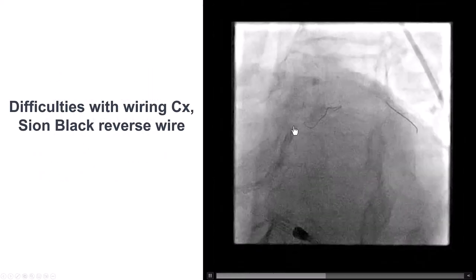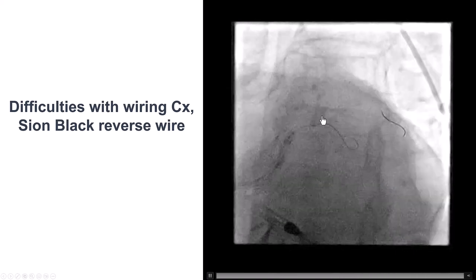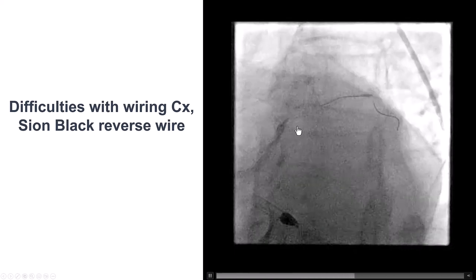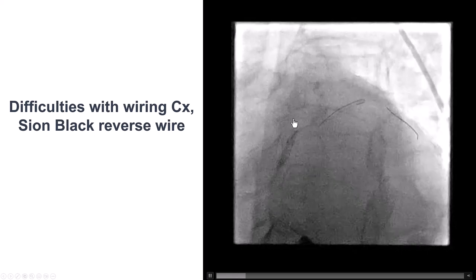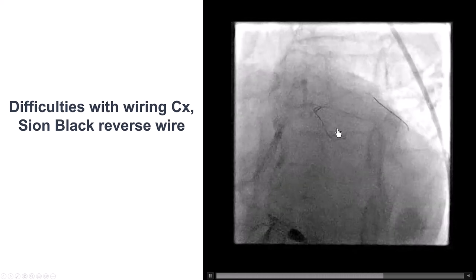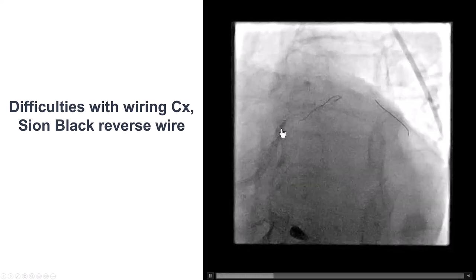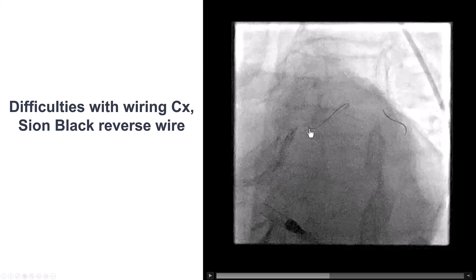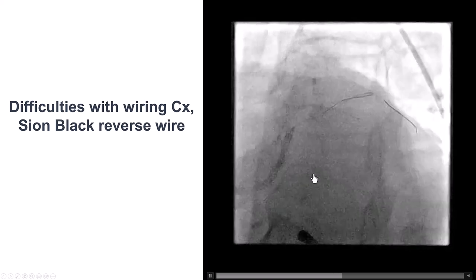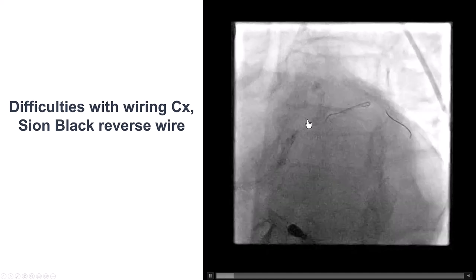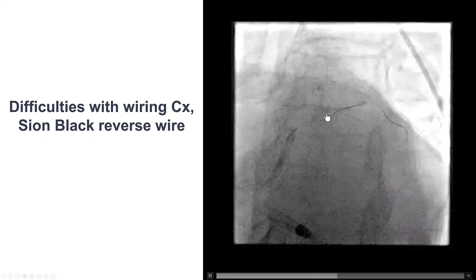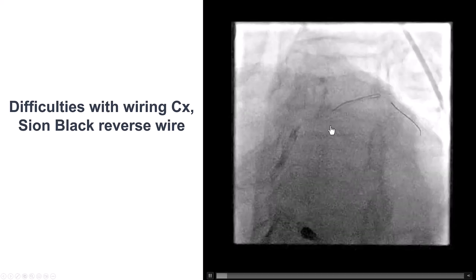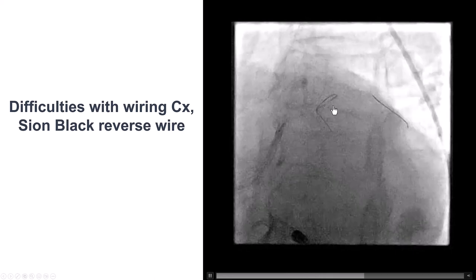The next step was to wire the circumflex. Antegrade wiring was attempted but failed due to the fairly acute angulation. After multiple attempts including using a dual-lumen microcatheter, the reversed guidewire technique was used. A Sion Black guidewire was folded over approximately three centimeters from the tip, creating a knuckle. The wire was introduced into the guide catheter with the knuckle going forward rather than the tip. Using a dual-lumen microcatheter (the Sasuki) to deliver it into the Ramus branch, the wire was manipulated back and forth, and the loop successfully selected and entered the circumflex.